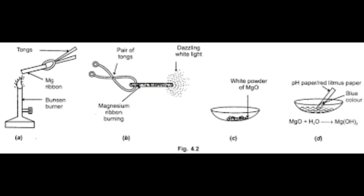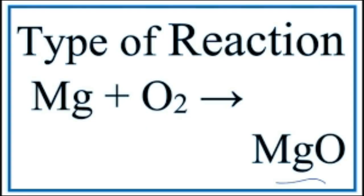First, clean a magnesium ribbon about two centimeters long by rubbing it with sandpaper. Next, hold it with a pair of tongs, burn it using a spirit lamp or burner, and collect the ash formed in a watch glass. When burning the magnesium ribbon, keep it as far as possible from your eyes. You must have observed that magnesium ribbon burns with a dazzling white flame. First observation: it burns with white flame. Second observation: it changes into a white powder — magnesium combines with oxygen in air to form magnesium oxide.